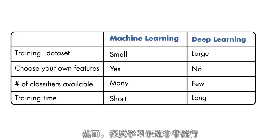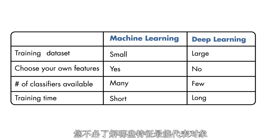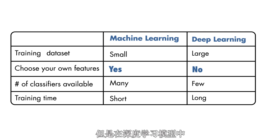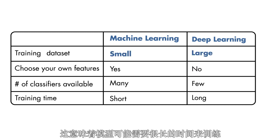However, deep learning has become very popular recently because it is highly accurate. You don't have to understand which features are the best representation of the object — these are learned for you. But in a deep learning model, you need a large amount of data, which means the model can take a long time to train.